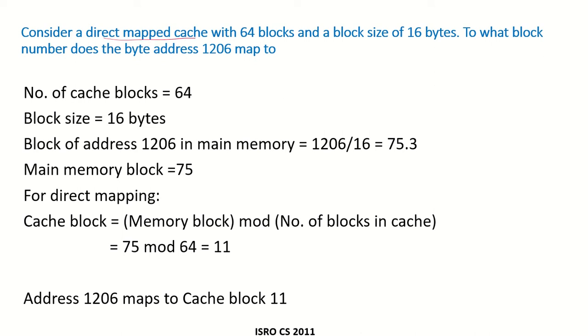Consider a direct mapped cache with 64 blocks and a block size of 16 bytes. To what block number does the byte address 1206 map to?